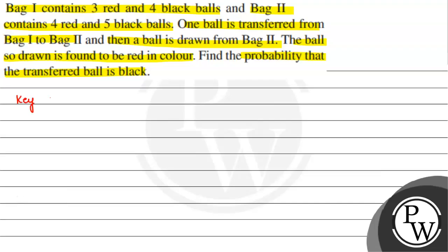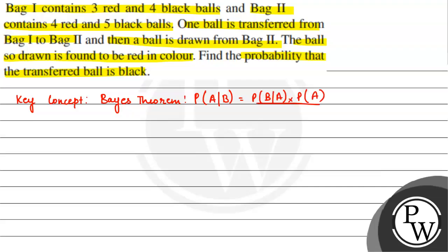So, the key concept we will use here involves one event, another event, and their overlap or dependency. We will use Bayes' theorem. Bayes' theorem states that the probability of A given B equals the probability of B given A, multiplied by the probability of A, divided by the probability of B. Here A and B are events.